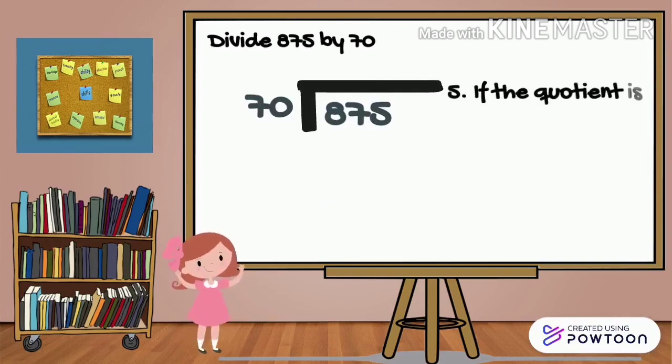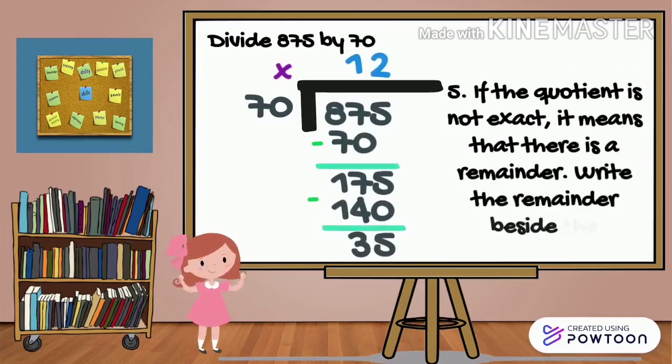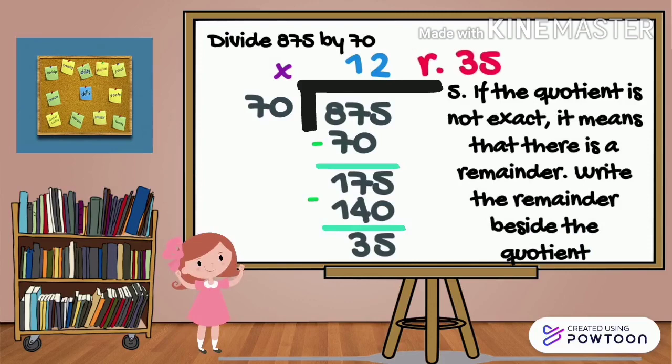And for the last step. If the quotient is not exact, it means that there is a remainder. Write the remainder beside the quotient. So the remainder is 35.